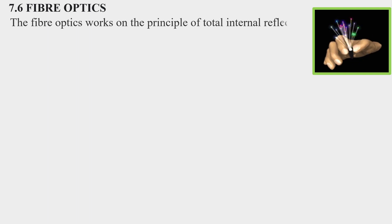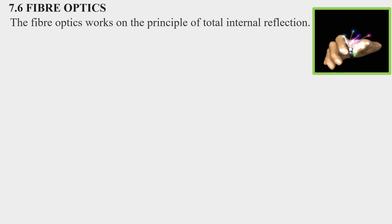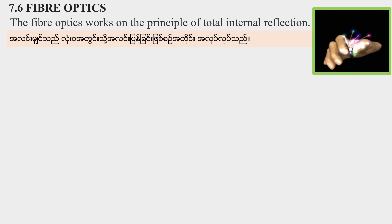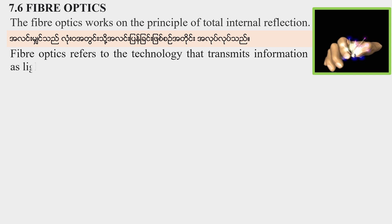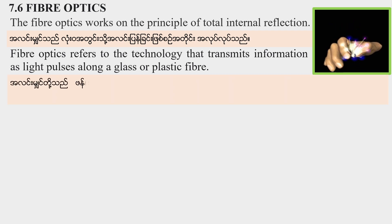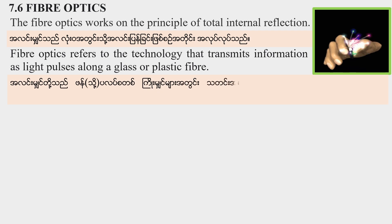Fiber Optics works on the principles of total internal reflection. Fiber Optics refers to the technology that transmits information as light pulses along glass or plastic fibers. We use glass or plastic.